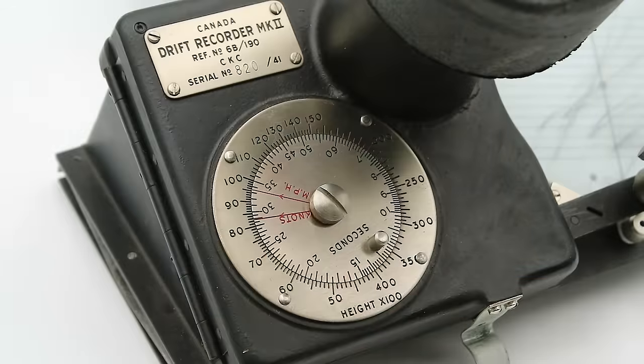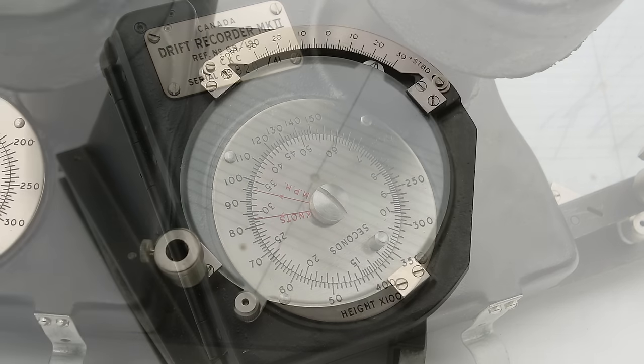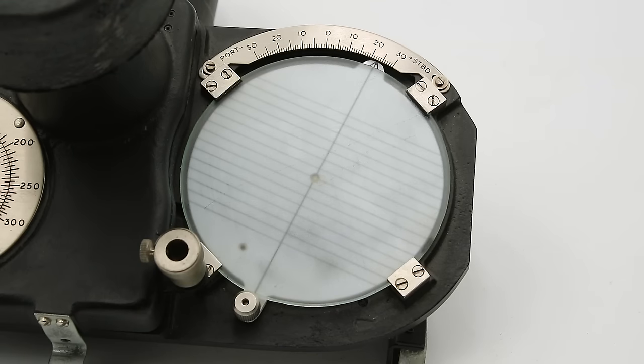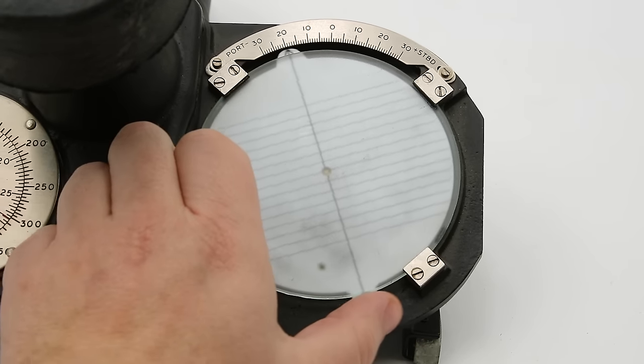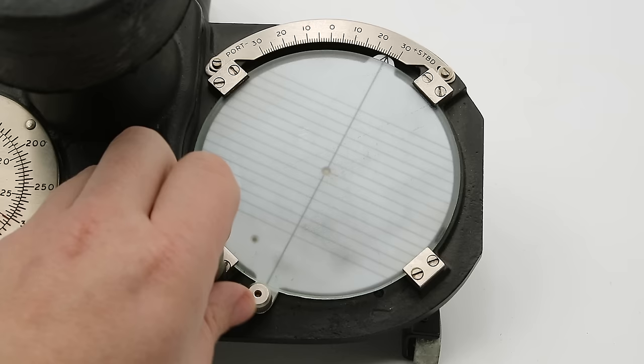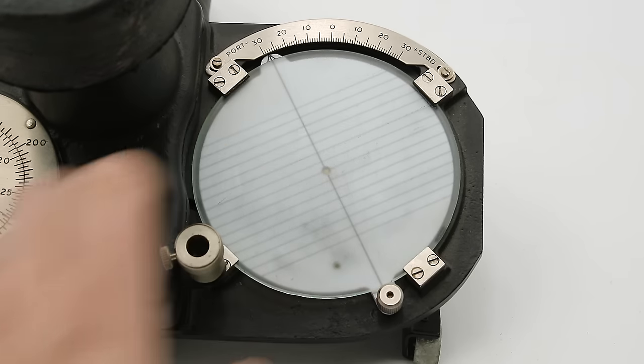On the left side of the eyepiece we have a little circular slide rule here but we'll get to how that works in just a second. On the other side we have a frosted glass disc in a rotating bezel which is marked with degrees along the top and this sits over a white plastic disc etched with parallel reference drift lines.